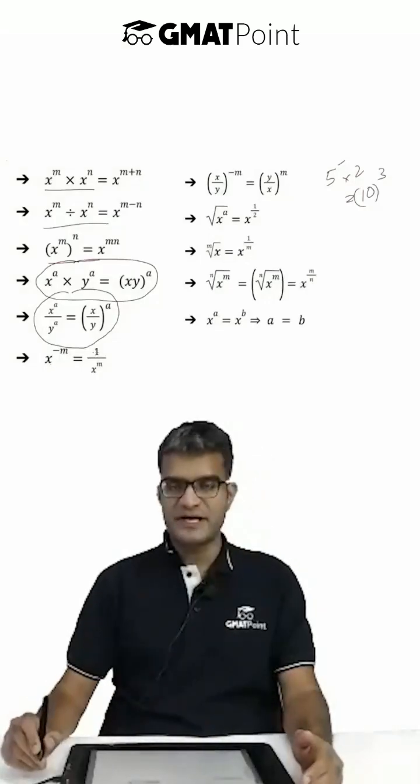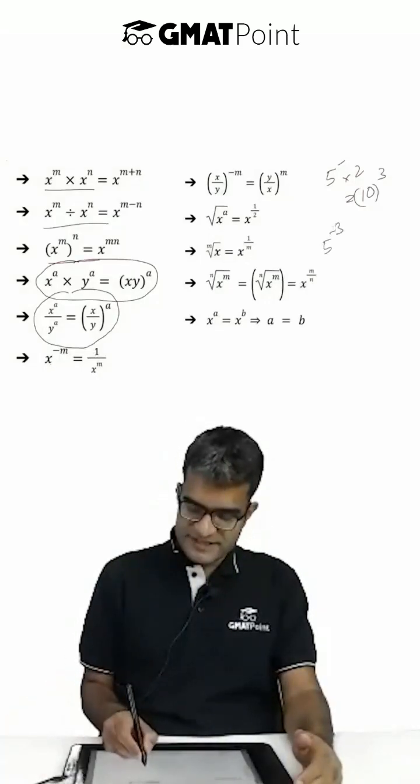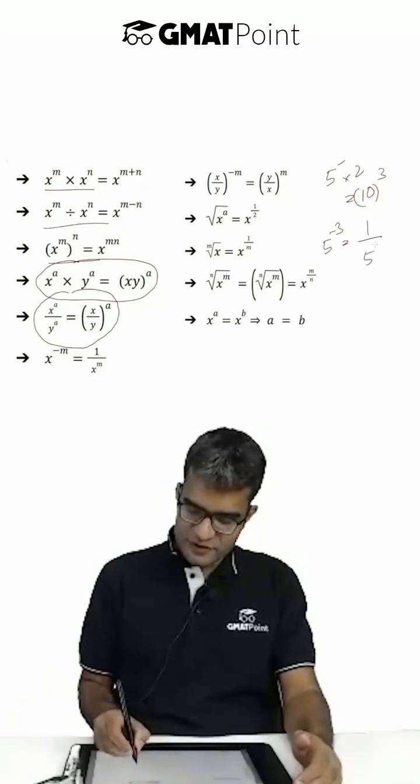x to the power minus m is 1 by x to the power m. For example, 5 to the power minus 3 equals 1 by 5 to the power 3.